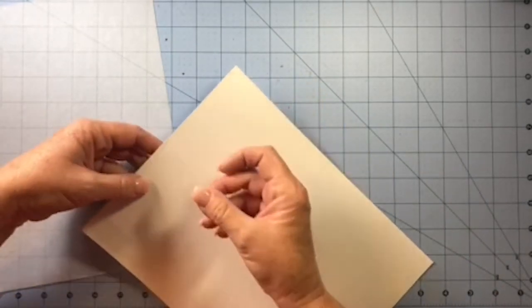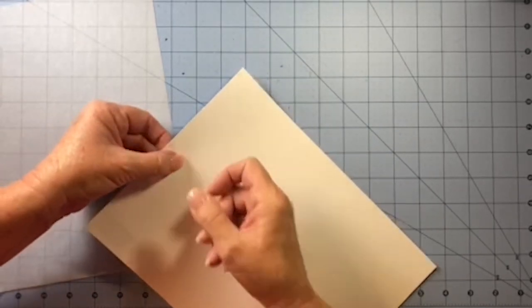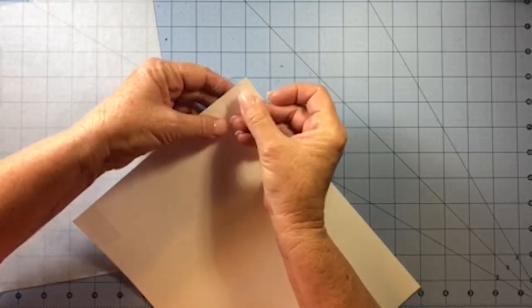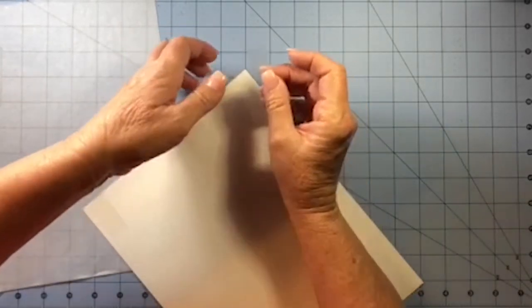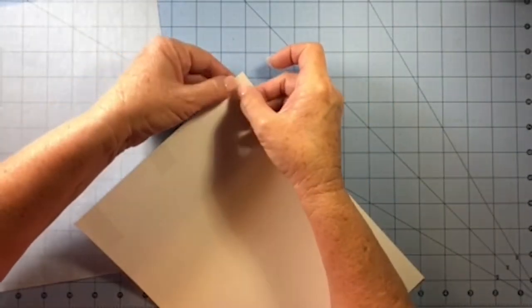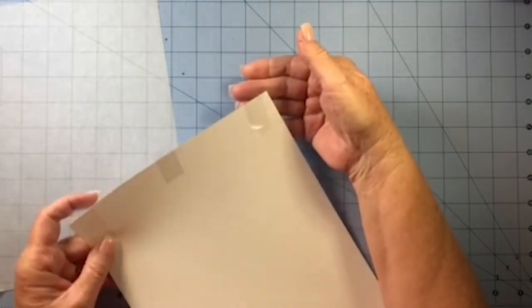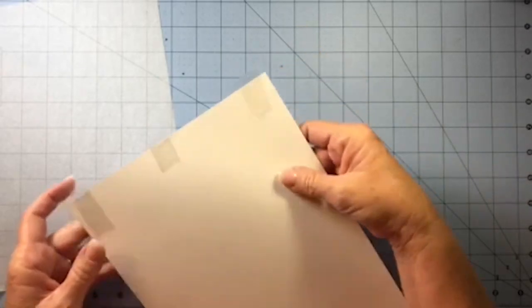I'll put one on the left side, one in the middle, and one on the right. Whoops, that one folded over. And all of these are going to be sticking up by about a quarter of an inch.